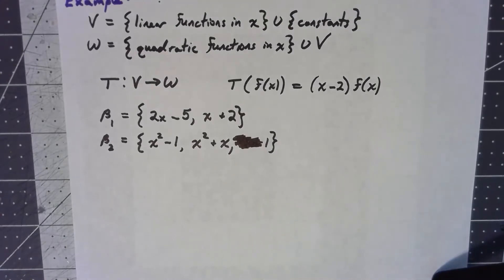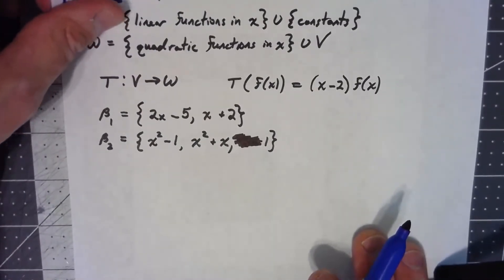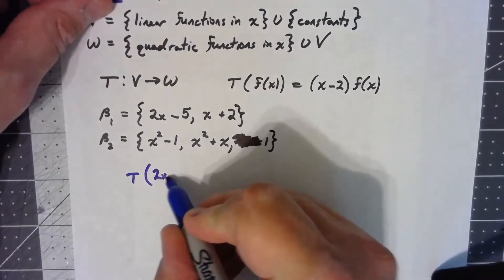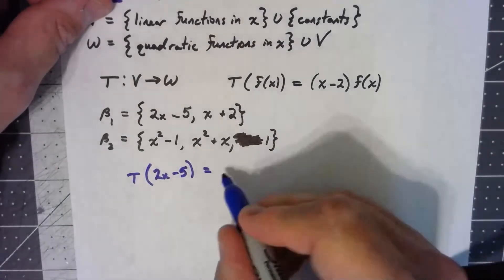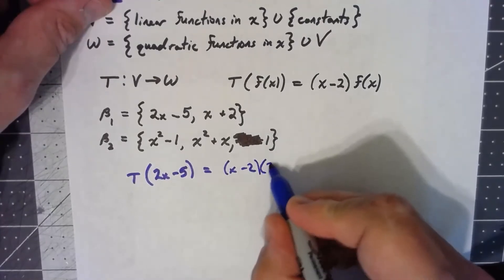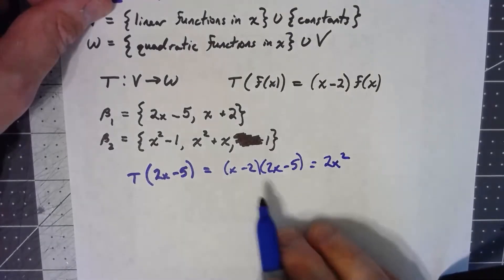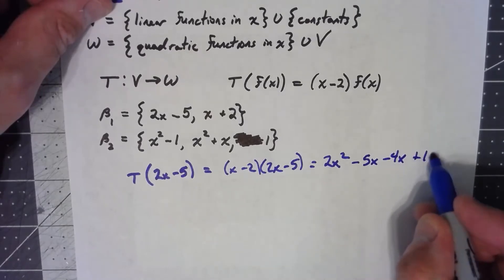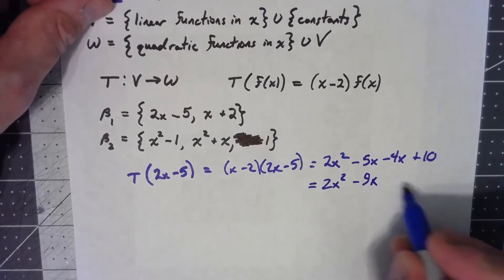To figure out what the matrix is that takes these things from V to W in terms of the coordinate vectors, I need to see what is T of 2x minus 5. Well, T of 2x minus 5 is x minus 2 times 2x minus 5, which gives me 2x squared minus 5x minus 4x plus 10, so 2x squared minus 9x plus 10.